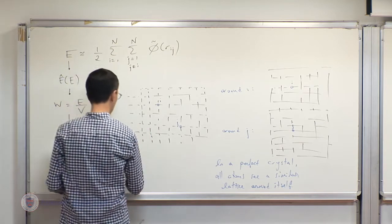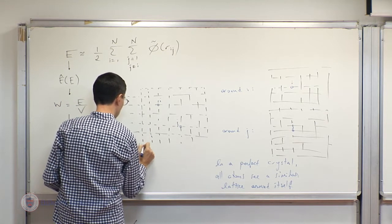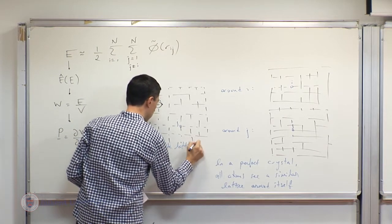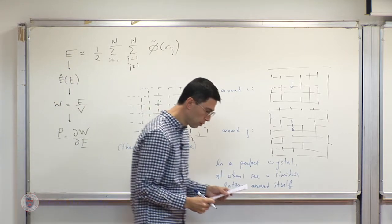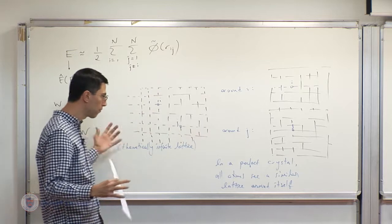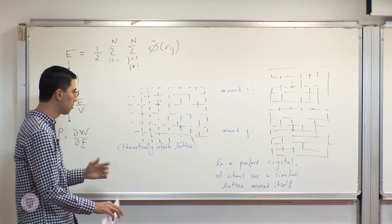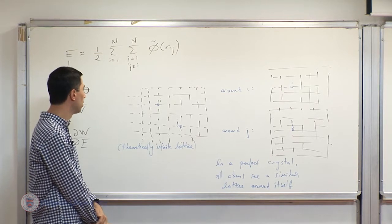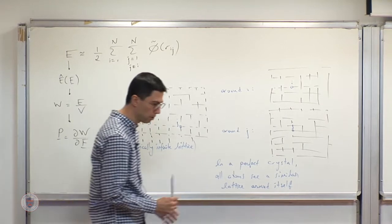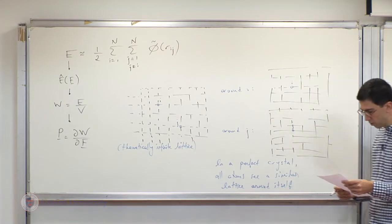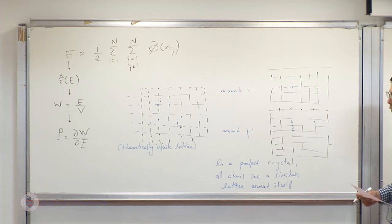We are assuming a theoretically infinite lattice — a requirement for that argument. In practice, the number of atoms doesn't have to be really infinite; the number is very large. This assumption helps alleviate some difficulties that could otherwise be overcome with alternative approaches, but assuming infinity means we don't have to worry about many details.